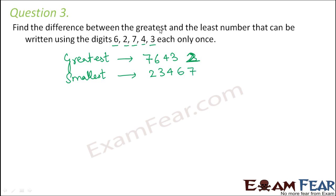So now if you have to find the difference between the greatest and the least number, how would you find the difference? So let us find the difference. So the difference would be 76432 minus 23467.